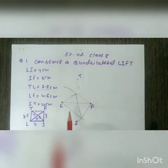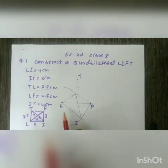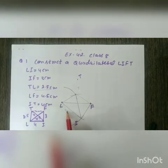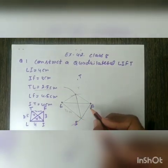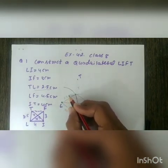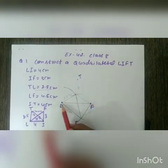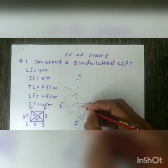This completes quadrilateral LIFT in which two diagonals and three sides were given. Please don't forget to label the construction — write the length of all line segments: LI is 4 cm, IF is 3 cm, TL is 2.5 cm, diagonal LF is 4.5 cm, and diagonal IT is 4 cm.